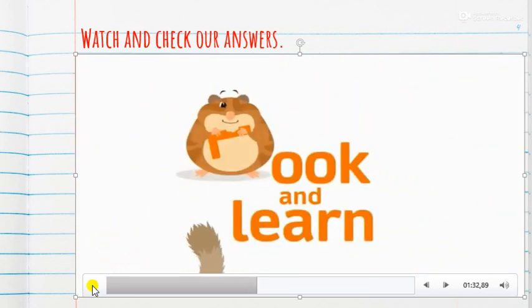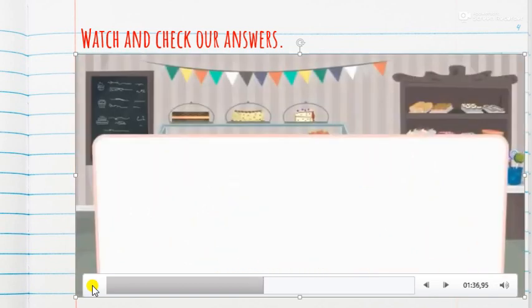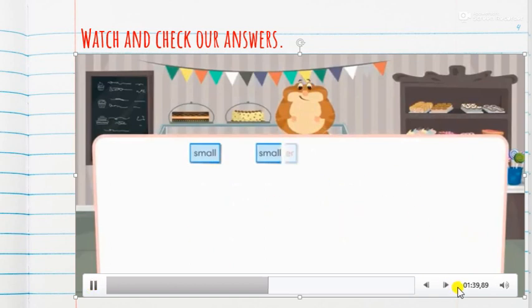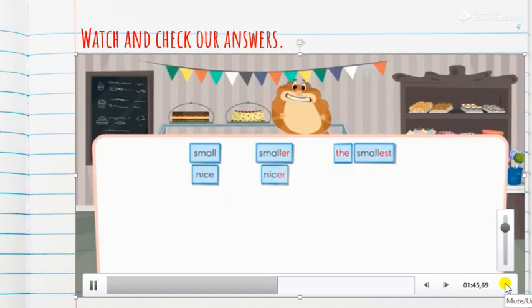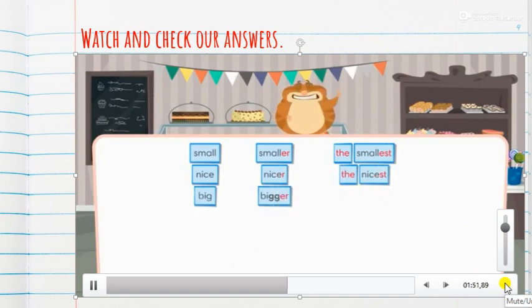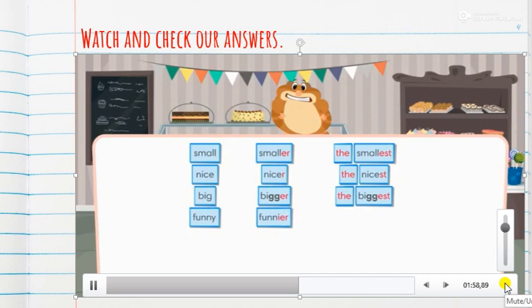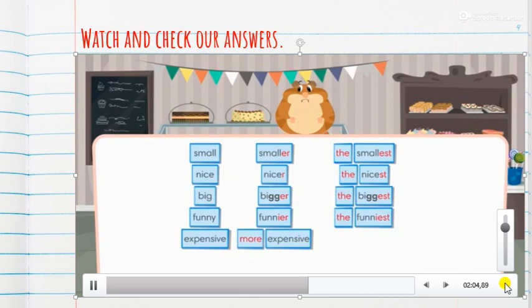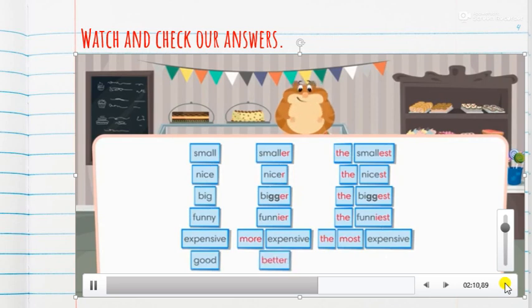Look and learn. Small, smaller, the smallest. Nice, nicer, the nicest. Big, bigger, the biggest. Funny, funnier, the funniest. Expensive, more expensive, the most expensive. Good, better, the best. Bad, worse, the worst.